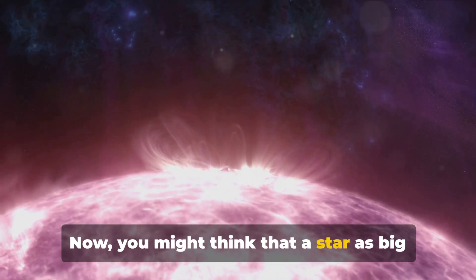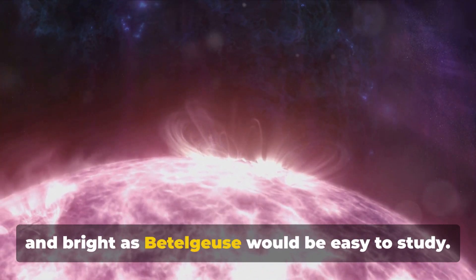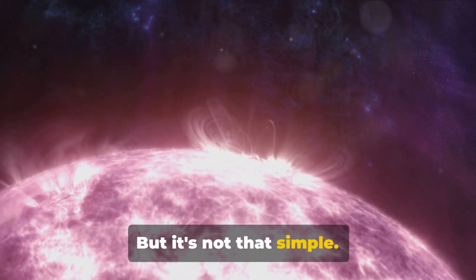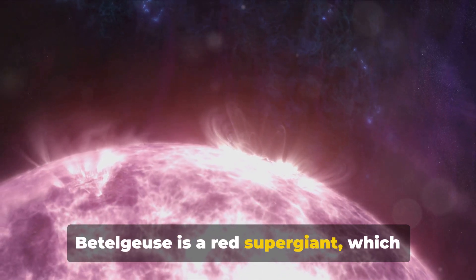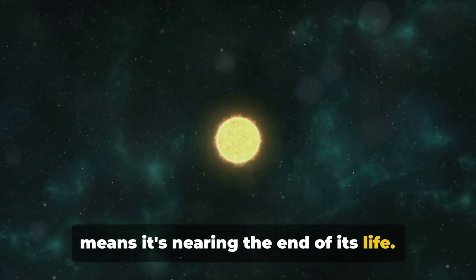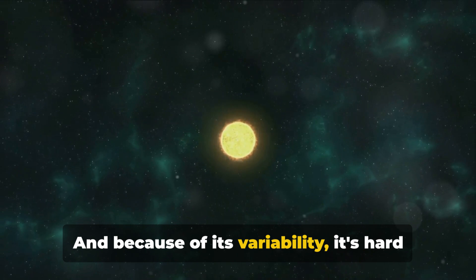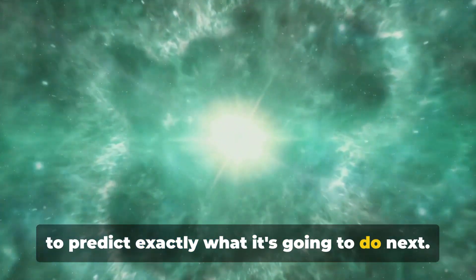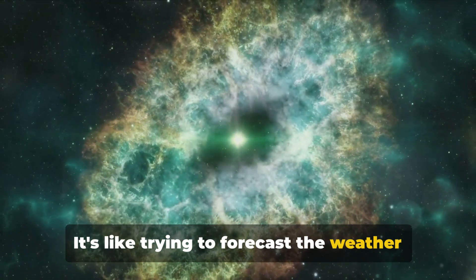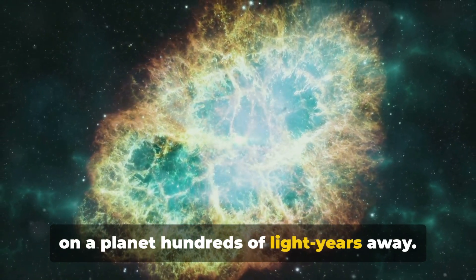Now, you might think that a star as big and bright as Betelgeuse would be easy to study, but it's not that simple. Betelgeuse is a red supergiant, which means it's nearing the end of its life. And because of its variability, it's hard to predict exactly what it's going to do next. It's like trying to forecast the weather on a planet hundreds of light years away.